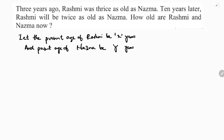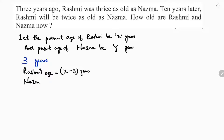3 years ago, since the present age of Rashmi is X, her age 3 years ago will be X minus 3. And Nizma's age will be Y minus 3.